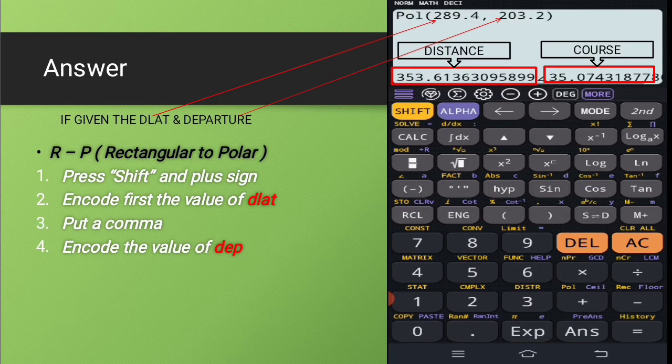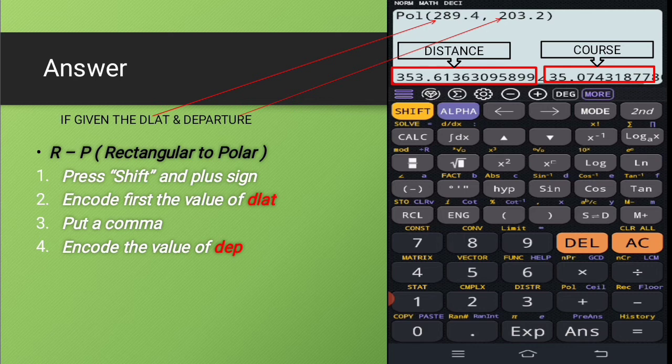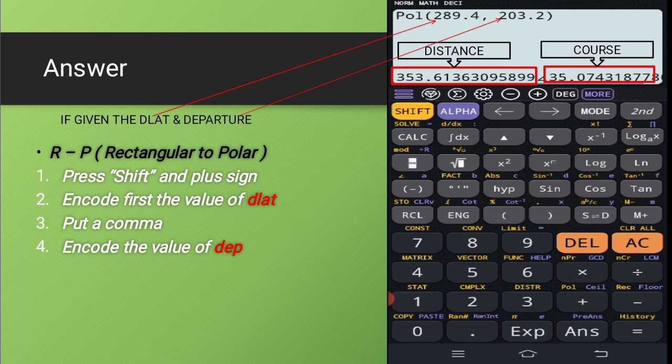So for example number two, we have there the given difference of latitude and the given departure. So in this case, we will not be using polar to rectangular, but instead the opposite, we have rectangular to polar.